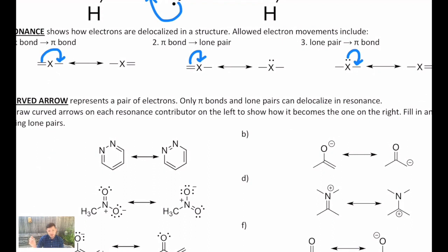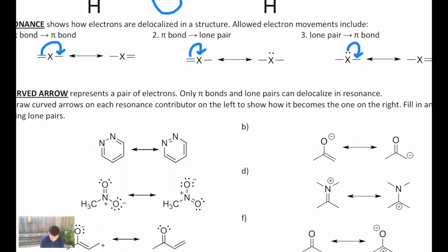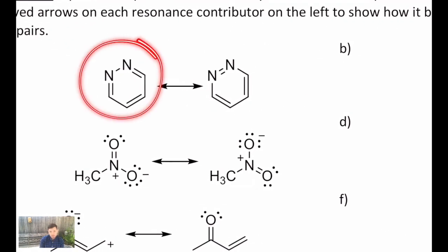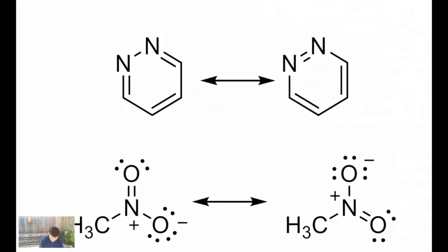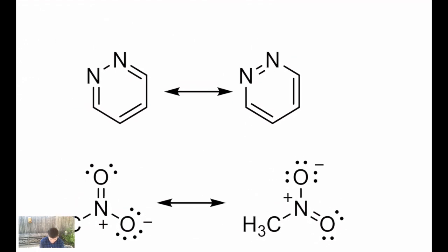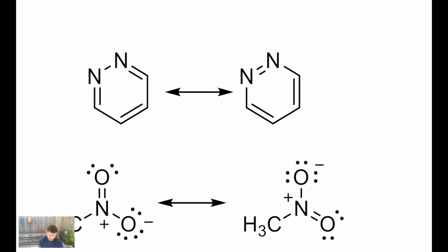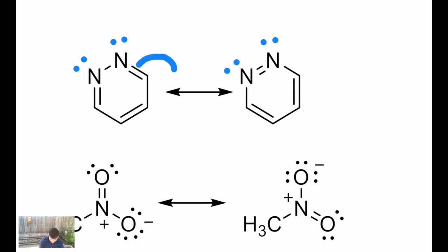Quite often we have multiples of these movements in a given set of resonance contributors. I want to practice that by using curved arrows to show how the contributor on the left turns into the one on the right. This is an aromatic ring with two nitrogens in it, and I notice multiple things have changed. A tip: if you've got lone pairs in a molecule that aren't currently drawn, go ahead and draw them in — it'll make it a lot easier. The lone pairs haven't moved; it's only the pi bonds. A pi bond in the upper right becomes a carbon-carbon bond on the right, a pi bond in the lower right becomes a pi bond in the lower left, and a pi bond on the left becomes a pi bond in the upper left.